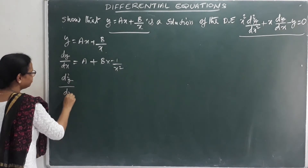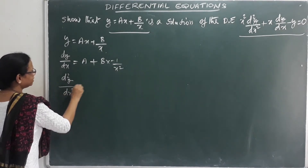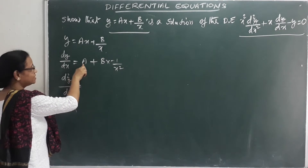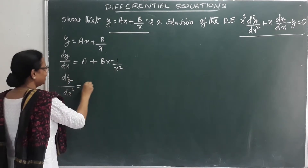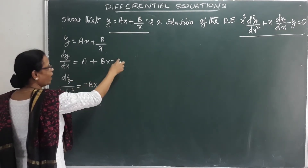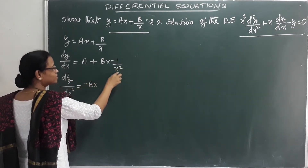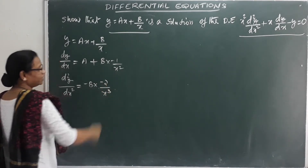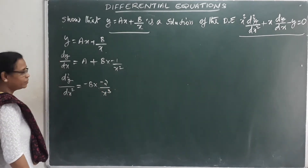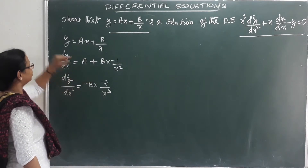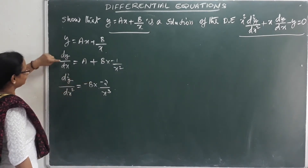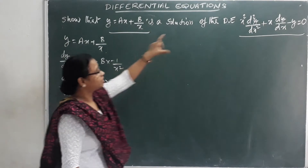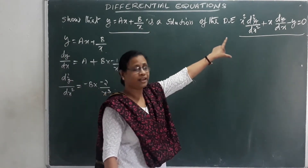Now the second derivative: d²y/dx² = 0 − b · (−2/x³), that is, 2b/x³. We have differentiated y, dy/dx, and d²y/dx². All of these results will be substituted into the differential equation.